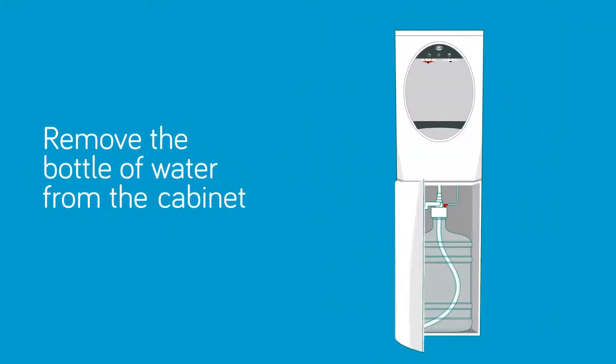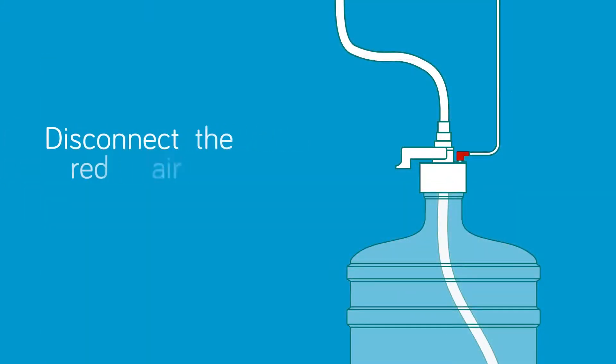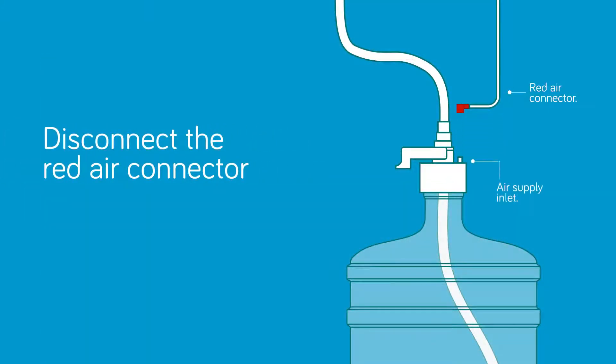With clean hands, first remove the bottle of water from the cabinet and disconnect the red air connector from the air supply inlet to depressurize the system.